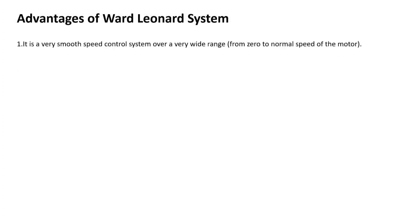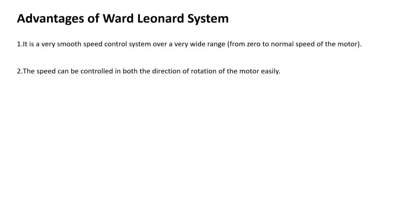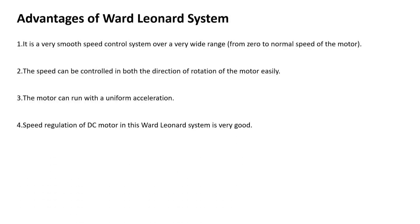The advantages of the Ward Leonard method are: it provides very smooth speed control over a wide range; the speed can be controlled in both directions of rotation of the motor easily; the motor can run with uniform acceleration; the speed regulation of the DC motor in this system is very good; and it has regenerative braking property.